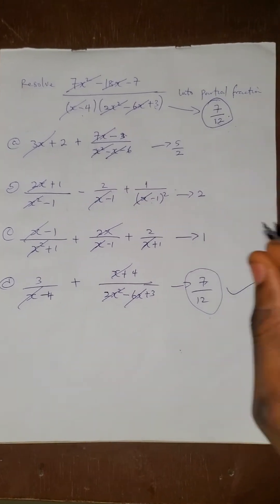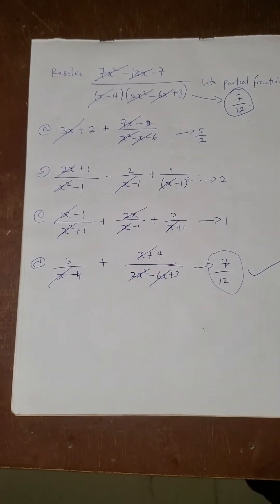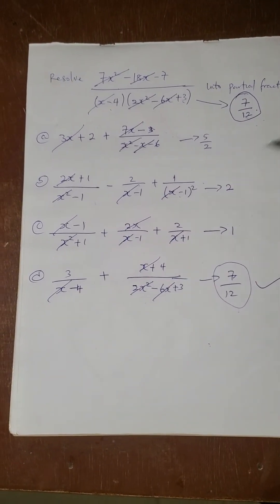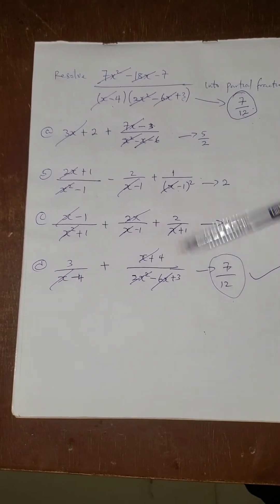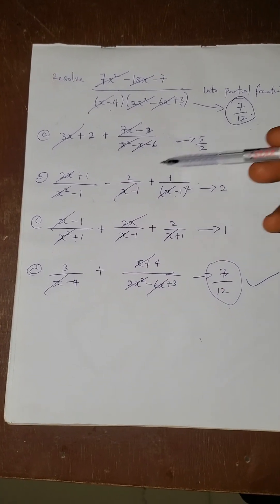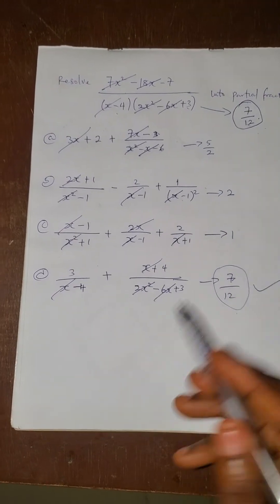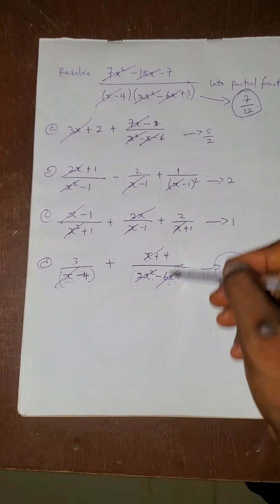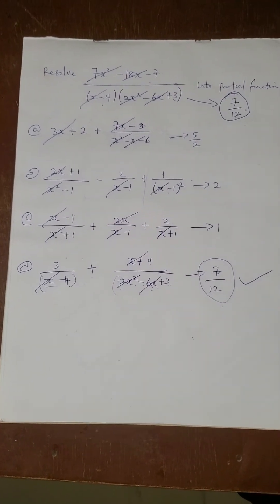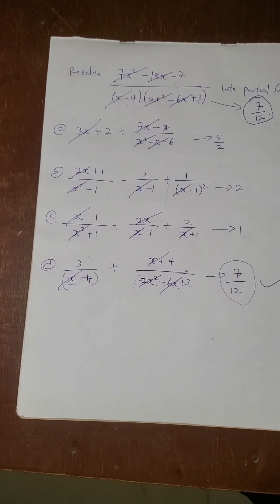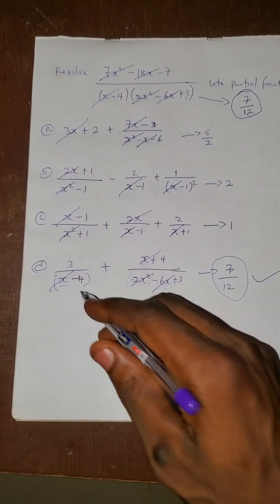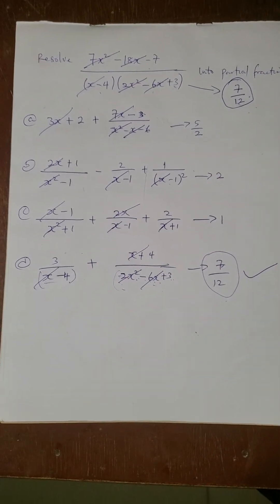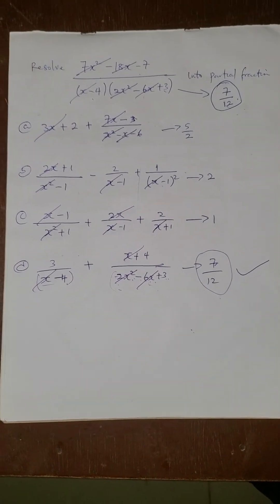So that is how to do partial fractions using the AND method and the calculator shortcut method. You can practice this on many partial fraction questions. Also notice: the denominator in the question is x minus 4 and 2x squared minus 6x plus 3. The only option that has the same denominator as the question is Option D — so it is already obvious that Option D is the correct answer, even before calculating. Thank you very much. God bless you. Like, comment and subscribe, and follow us for more videos.